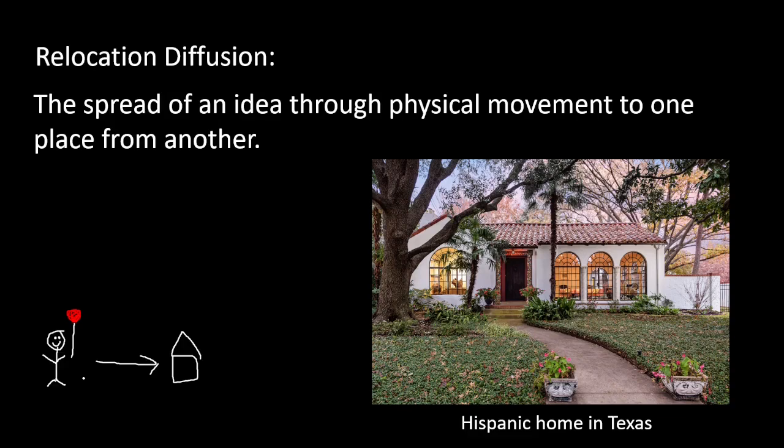What moves through Relocation Diffusion is folk culture. Folk culture is basically the opposite of popular culture — it's our old traditional culture. Country music is a good example: not your modern country music like Taylor Swift, but traditional country music you see in small towns. All of that folk culture goes through Relocation Diffusion and does not increase in trend.